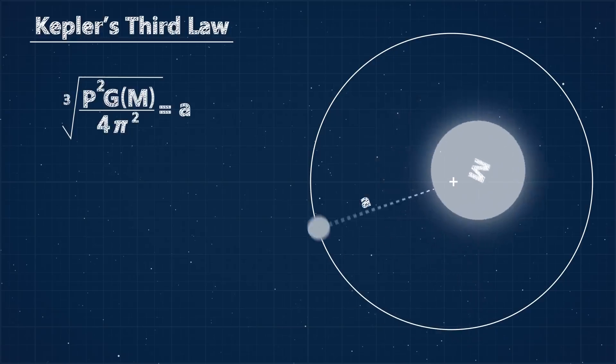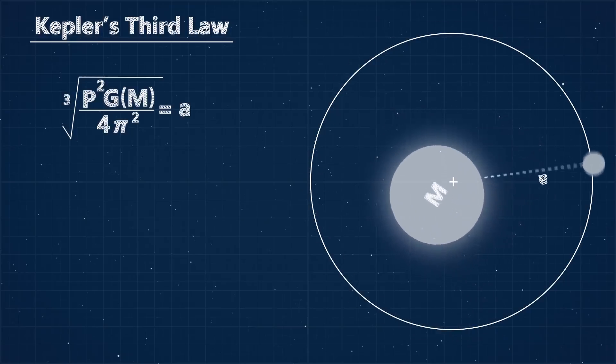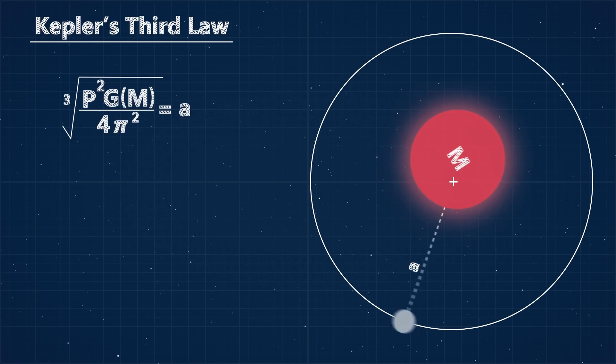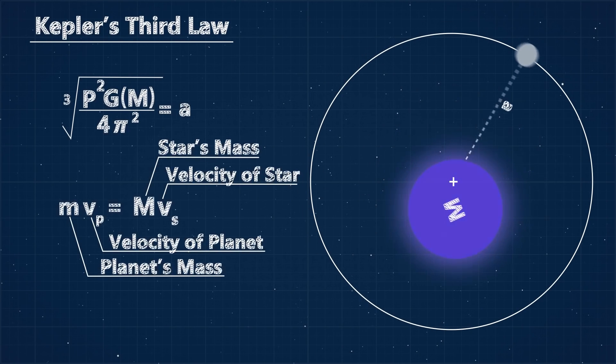We can measure the magnitude of this deviation by detecting the Doppler shift in the star's light frequency. As the star moves towards us, the light becomes slightly more blue, and when the star moves away from us, it becomes slightly more red.